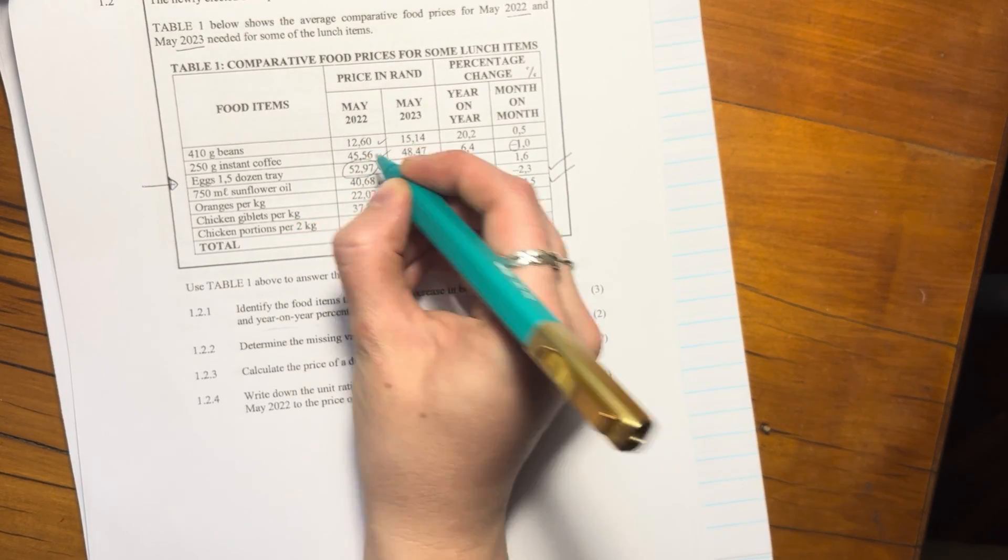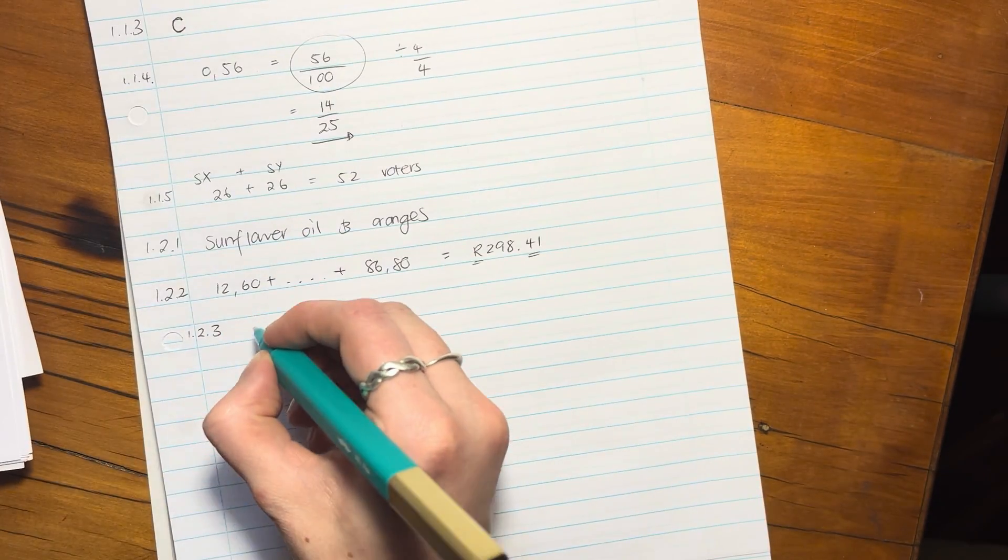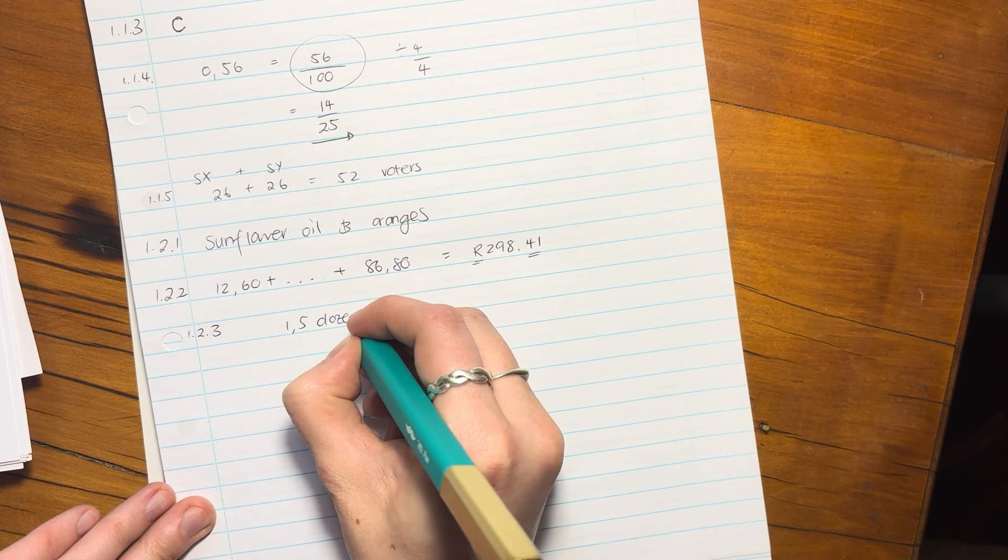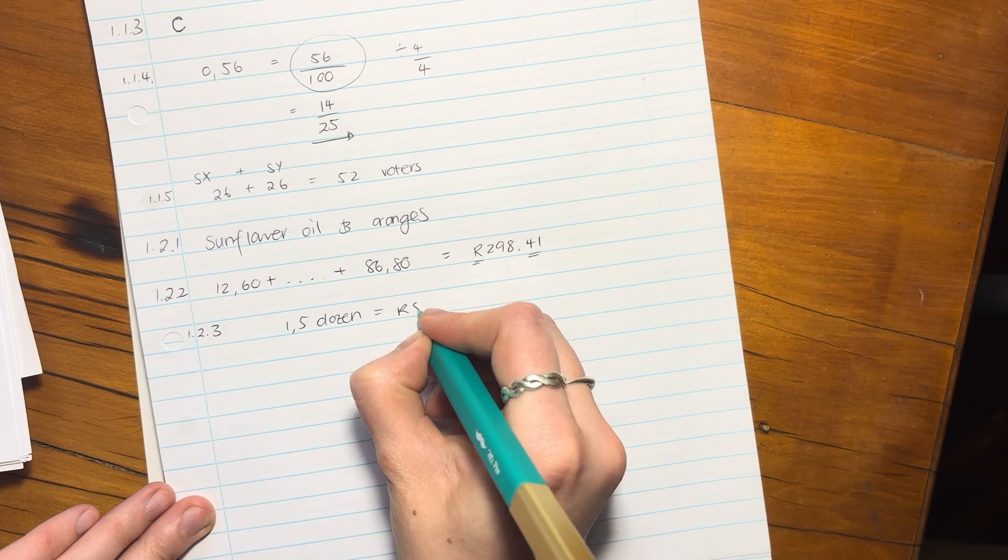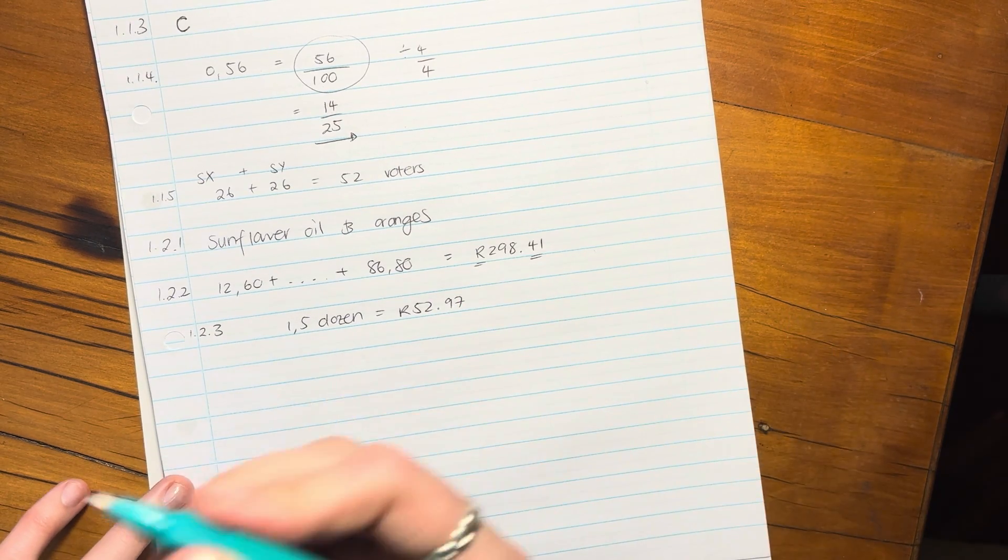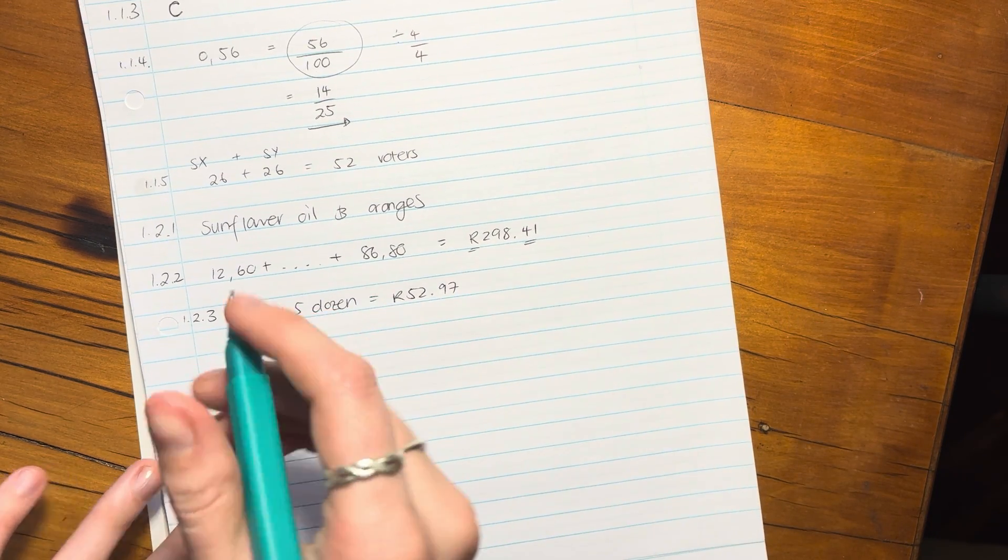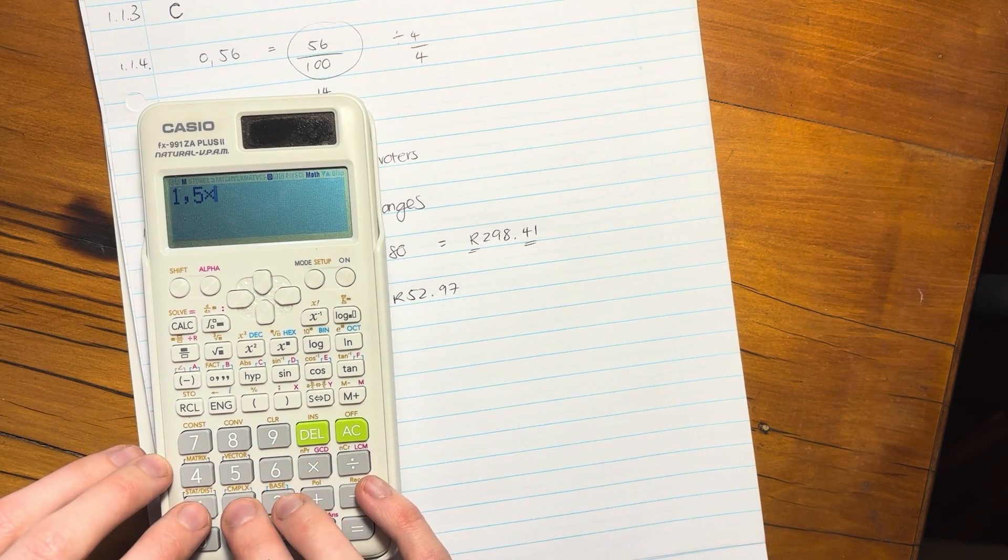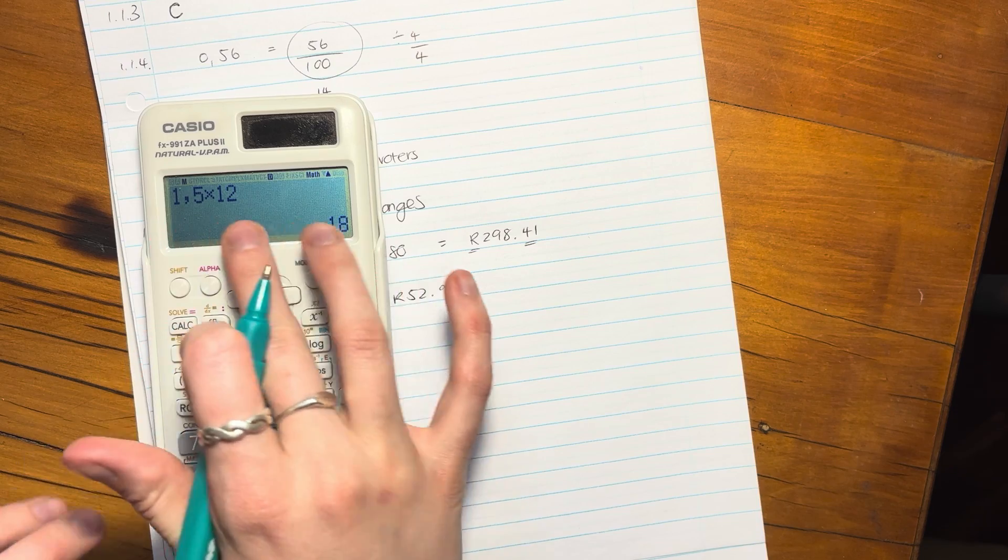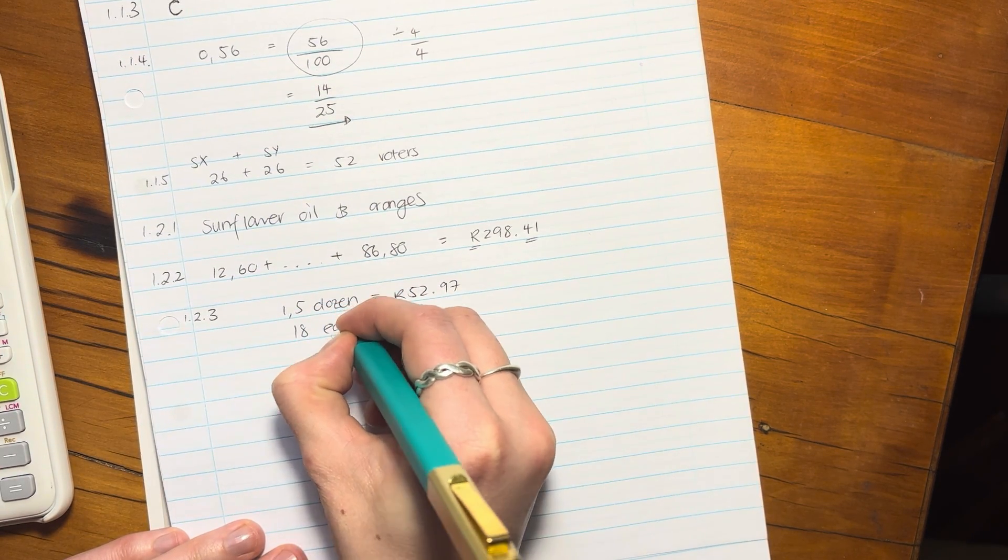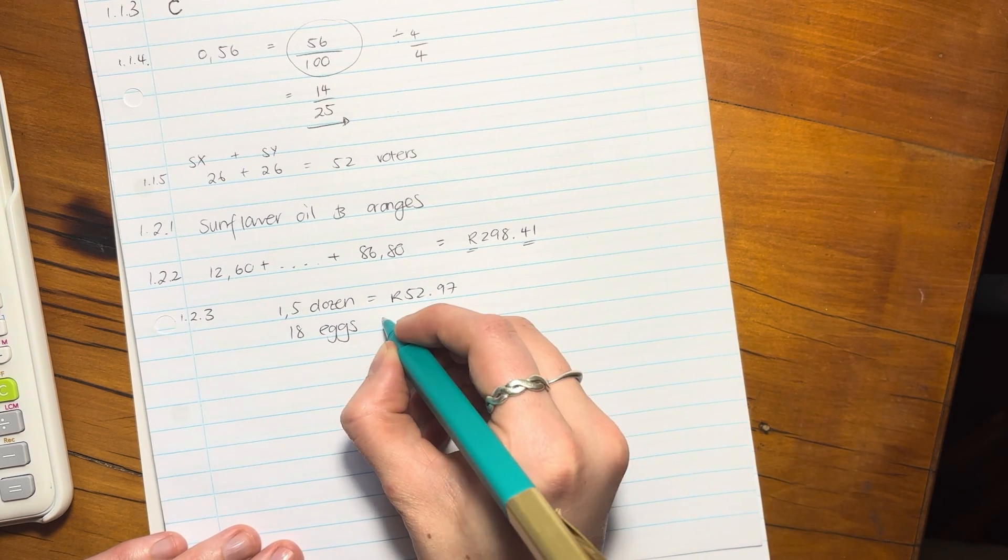So let's just write that down first. I'm going to say one and a half dozen equaled 52 rand and where am I getting this from? Again, over here, 52 rand and 97 cents. So we have that. One and a half dozen, and if you're not comfortable with that, you can put it like this: one and a half times how many is in a dozen? 12. So one and a half dozen means 18 eggs. 18 eggs in May 2022 equaled this amount.